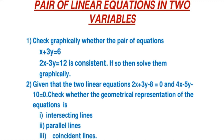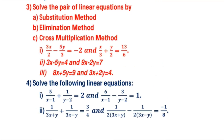For two coincident lines, infinitely many points are common between them — since a line consists of infinitely many points, there exist infinitely many solutions. As stated before, you have to solve linear equations by substitution method, elimination method, and cross multiplication method. Three sample linear equations in two variables are given — try to solve them yourself.